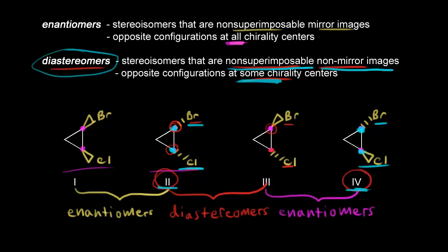What about comparing one and three? Looking at this carbon, bromine is on a wedge in both — same. But at the other carbon, chlorine is on a wedge in one and on a dash in three — that's different. So we only have an opposite configuration at one chirality center, making one and three diastereomers. By the same reasoning, one and four are also diastereomers of each other.